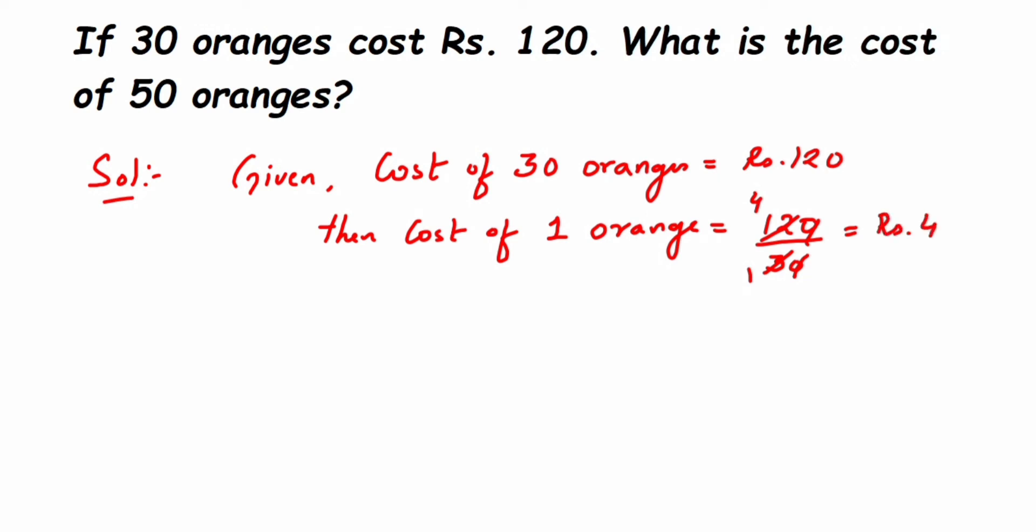Now since we got the cost of one orange, it's easy to find the cost of 50 oranges. Therefore, cost of 50 oranges will be equal to cost of one orange multiplied by 50 oranges.